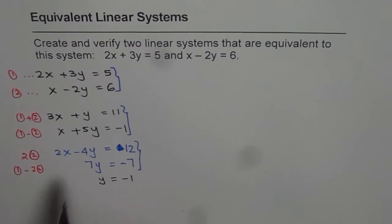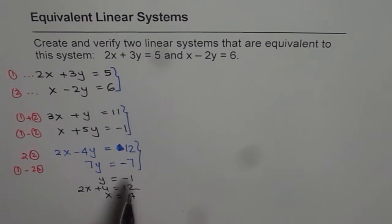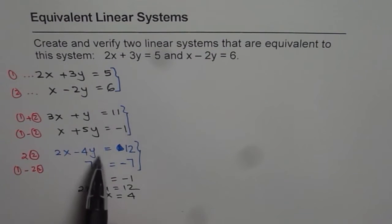Now if y is minus 1, then what is x? I can substitute the value of y here and find x. I get 2x and minus 1 makes it plus 4 equals to 12 and therefore x equals 12 minus 4 is 8, 8 divided by 2 is 4. So we get x equals to 4. I did a couple of steps together, but you can do it on your own.